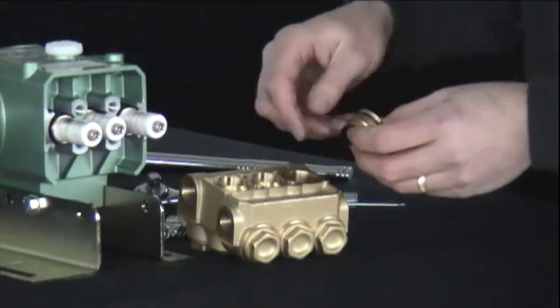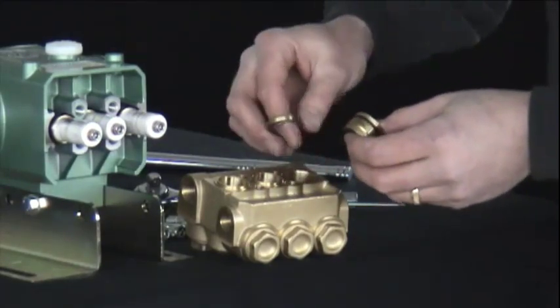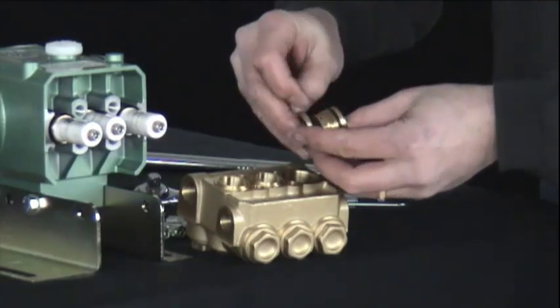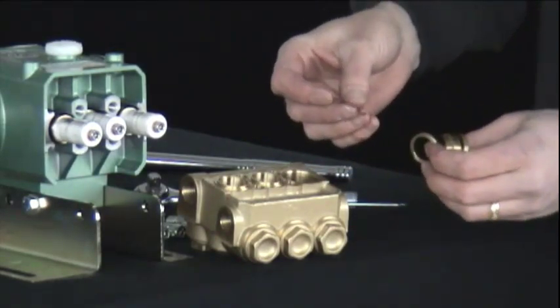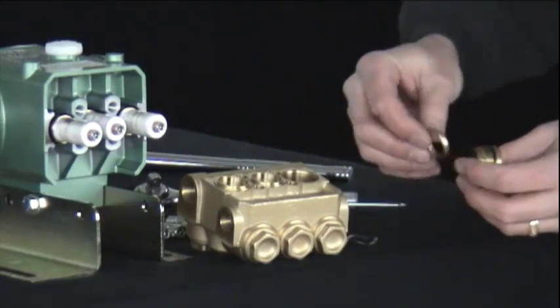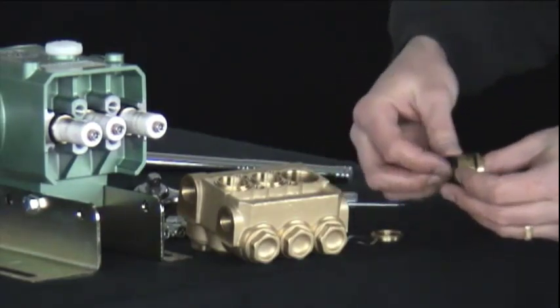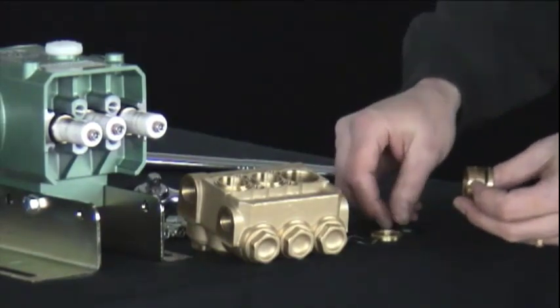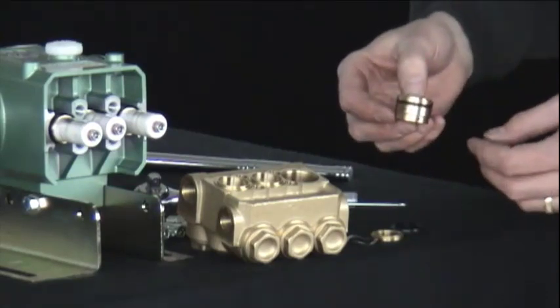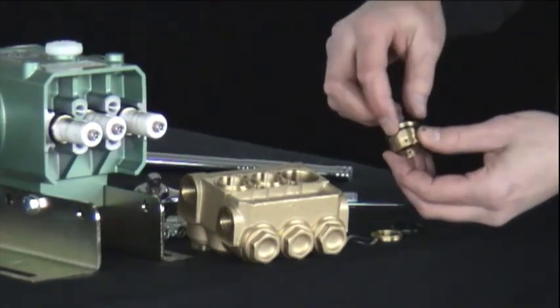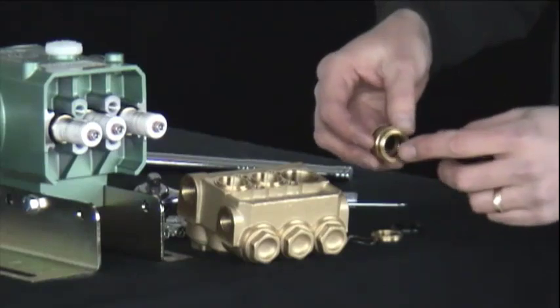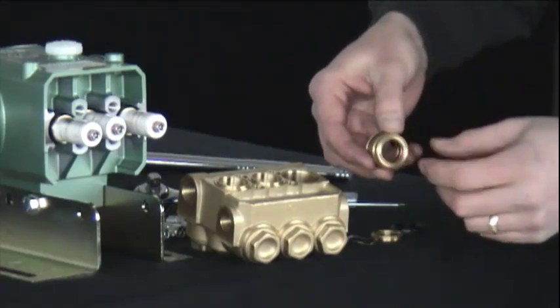The seal assembly consists of the following items. You have a stainless steel wave washer, brass support ring, high pressure seal, and the brass seal retainer, which has an O-ring at the top and on the inside holds the low pressure seal.